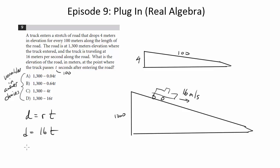So why I pick t is 100 is I get 1600 for the distance traveled along the road and since it's for every 100 meters it drops 4, 100 goes nicely into 1600. Again you could have picked anything it just makes the math easier.